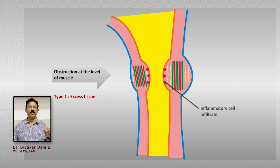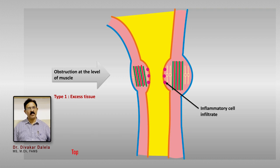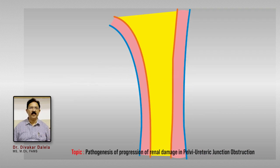In some patients, inflammation develops in the urothelium or sub-urothelial plane, and there occurs inflammatory cell infiltrate, which will again increase the volume and worsen the obstruction. So in Type 1 pattern of PUJ obstruction, you get excess tissue at the pelvi-ureter junction — either muscle, collagen, or inflammatory cell infiltrate.